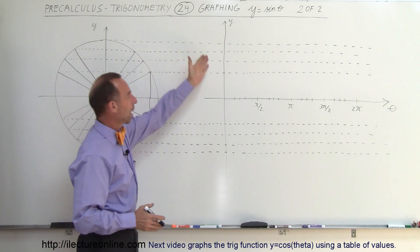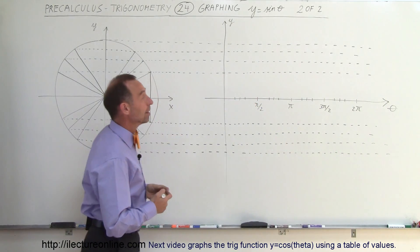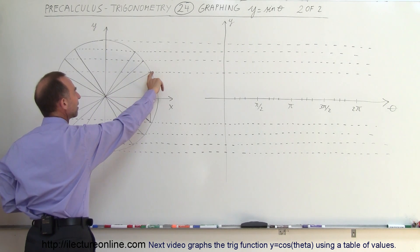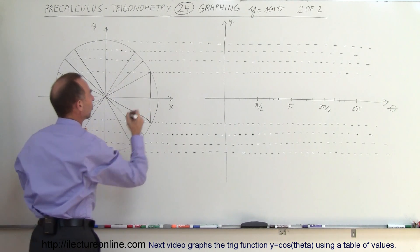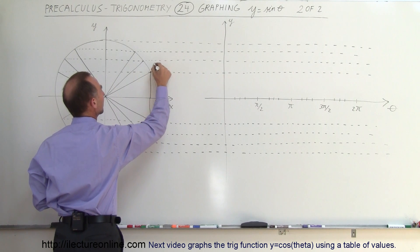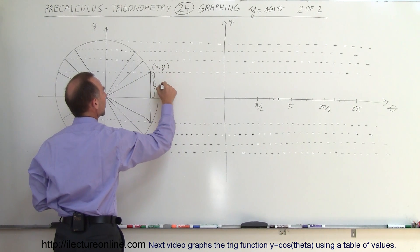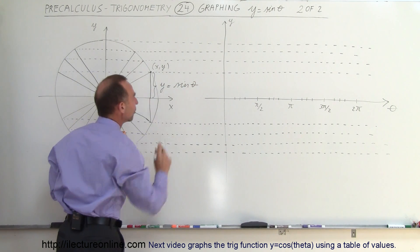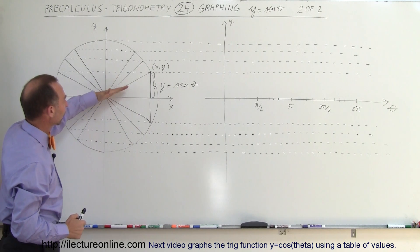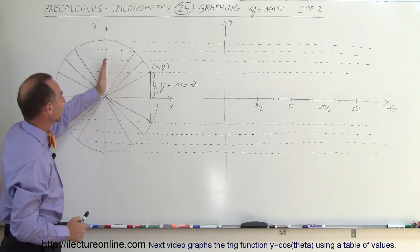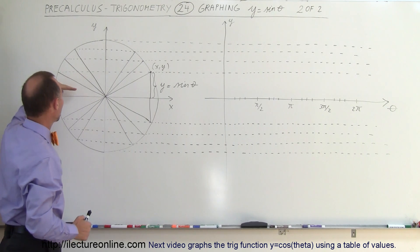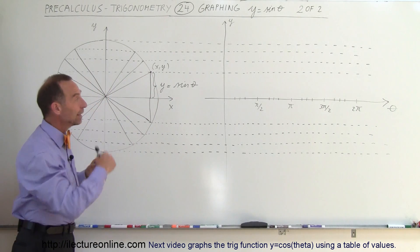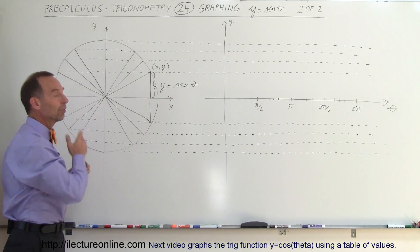Here we have the y and theta axis on which we're going to draw the sine function, and here we have the unit circle and the y values of a point on the unit circle. This is the xy point, and this here is the y value. By definition, the y value is equal to the sine of theta on the unit circle. For appropriate angles of 30 degrees, 45, 60, 90, 120, 135, 150, 180, and so forth all the way around the unit circle, we get appropriate y-axis values for those particular angles.